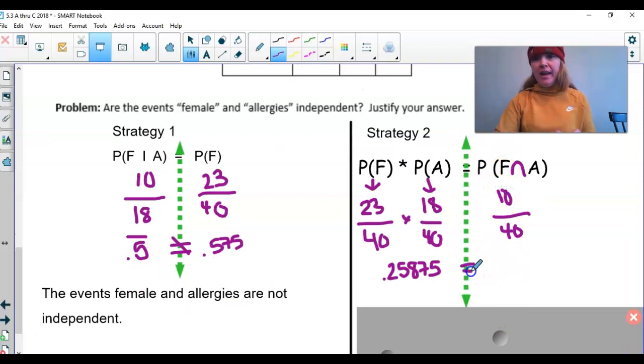Are these equal? No. So we say the events being female and having allergies are not independent. And that's all we do.